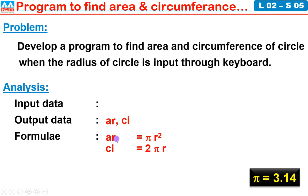What is the formula for area? Pi r square. We know the value of pi is 3.14. What is the formula for circumference? 2 pi r. So r must be input.